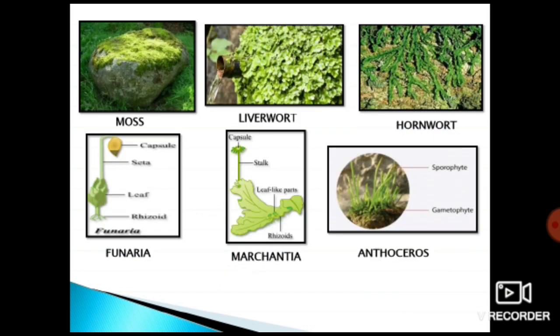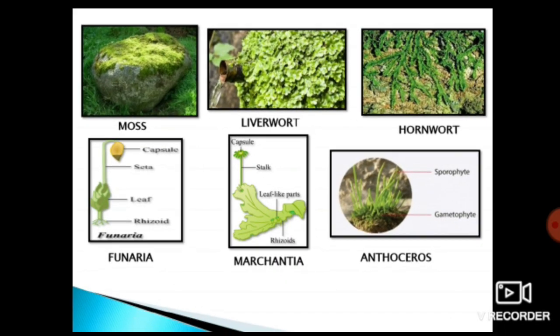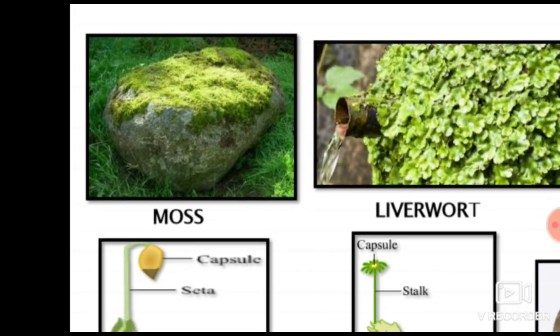Now let's look at examples. The first example is moss. As mentioned, in rainy season, in places that are wet and not getting proper sunlight, a green carpet-like structure develops — these are mosses.